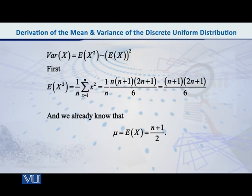After this, let us try to derive the variance of the same distribution. What is the shortcut formula for variance? You know that it is expected value of x square minus expected value of x whole square.